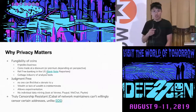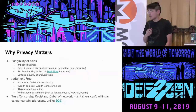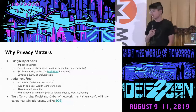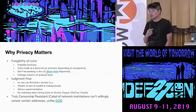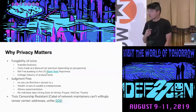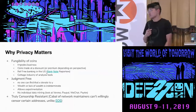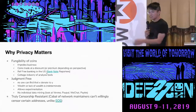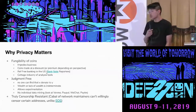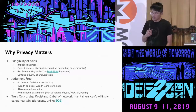Perhaps most relevant today: privacy eliminates data mining of personal data. Platforms like Venmo log every single transaction you make - they have explicit business models around understanding how you spend your money to give you better ads. If you want privacy in what you're doing, this is why we have privacy coins. And something more nuanced is truly censorship-resistant transactions.